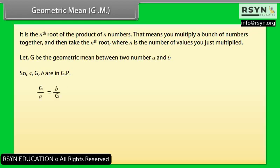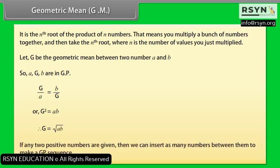Let G be the geometric mean between two numbers A and B, so A, G, B are in GP. Then G/A = B/G, or G² = A×B, therefore G = √(A×B). If any two positive numbers are given, we can insert as many numbers between them to make a GP sequence.